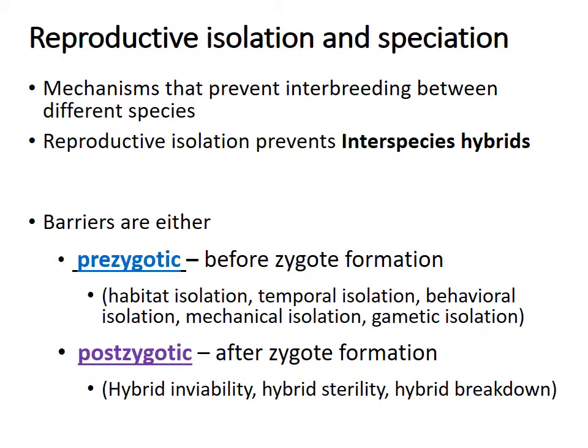To get separation of gene pools there must be reproductive isolating mechanisms — mechanisms that prevent interspecies hybrids from forming and prevent interbreeding between different species. These can be prezygotic, occurring before a zygote (fertilized egg) forms, or postzygotic, happening after zygote formation.